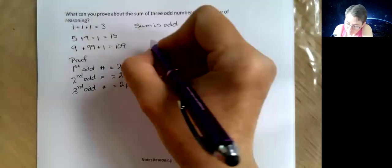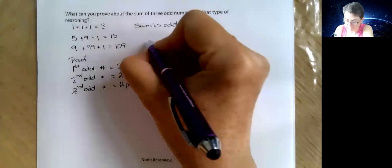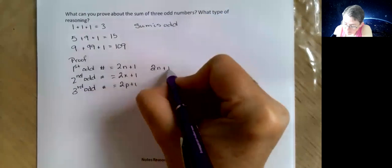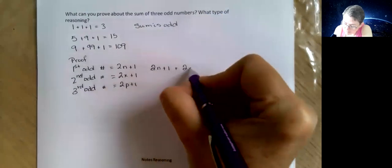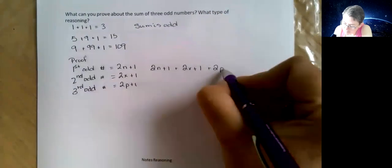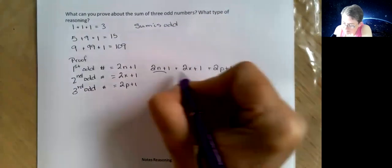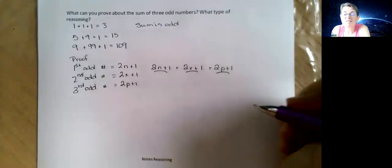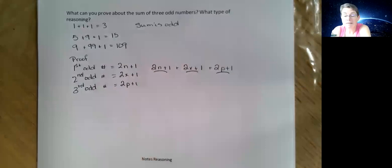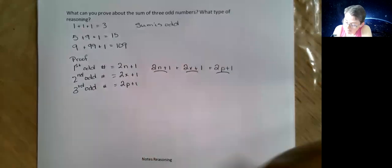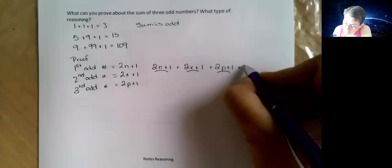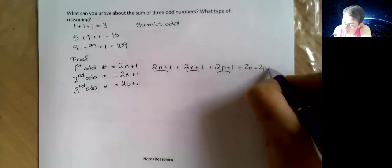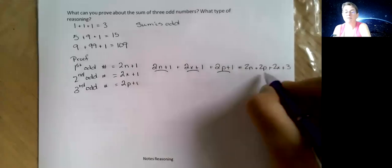So I'll do the sum down here: 2n plus 1 plus 2x plus 1 plus 2p plus 1. There's my first one, there's my second one, there's my third one. I know I could do it in brackets, but then I'd have to rewrite it, and the first thing I would do is take out all those brackets.